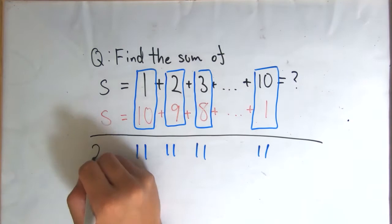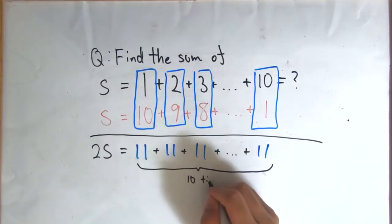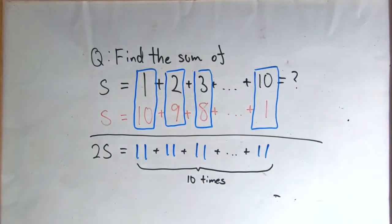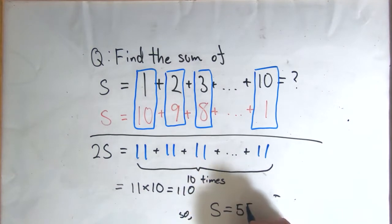Clearly, we have 10 of these, so twice the sum, because we wrote the sum twice, of 1 through 10 equals 11 times 10, or 110. Therefore, our sum from 1 through 10 is 55.